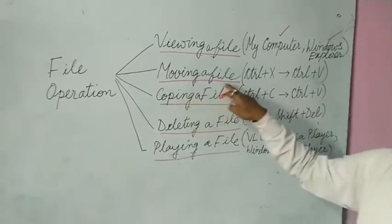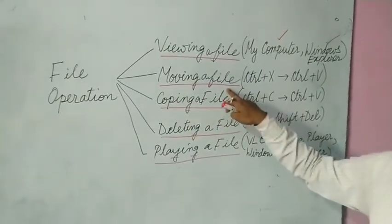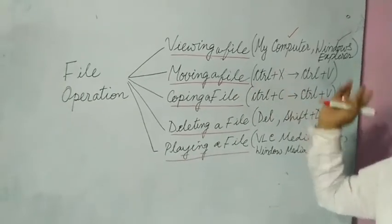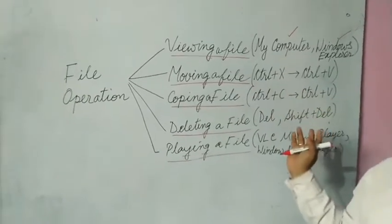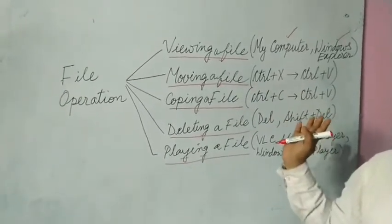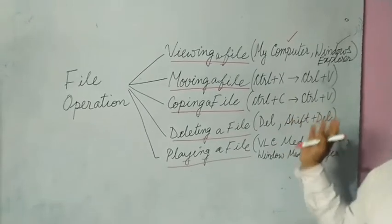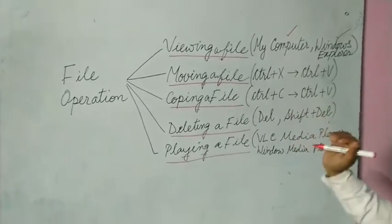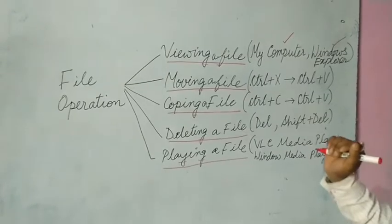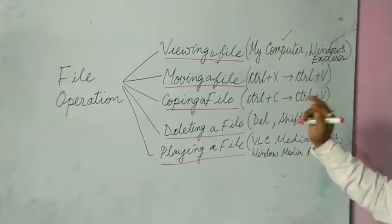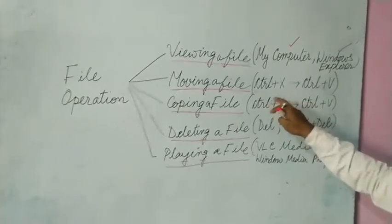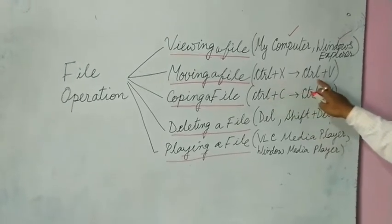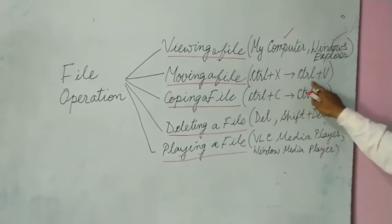Moving a file means you will place the file in another new location — for example, from D drive to your pen drive. The shortcut keys for the move operation are Ctrl+X and Ctrl+V.